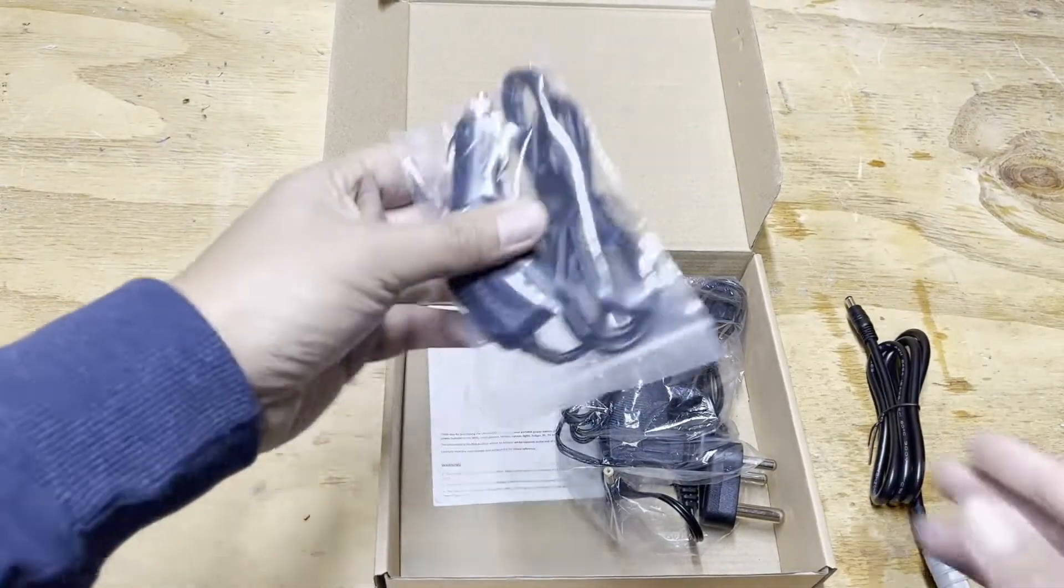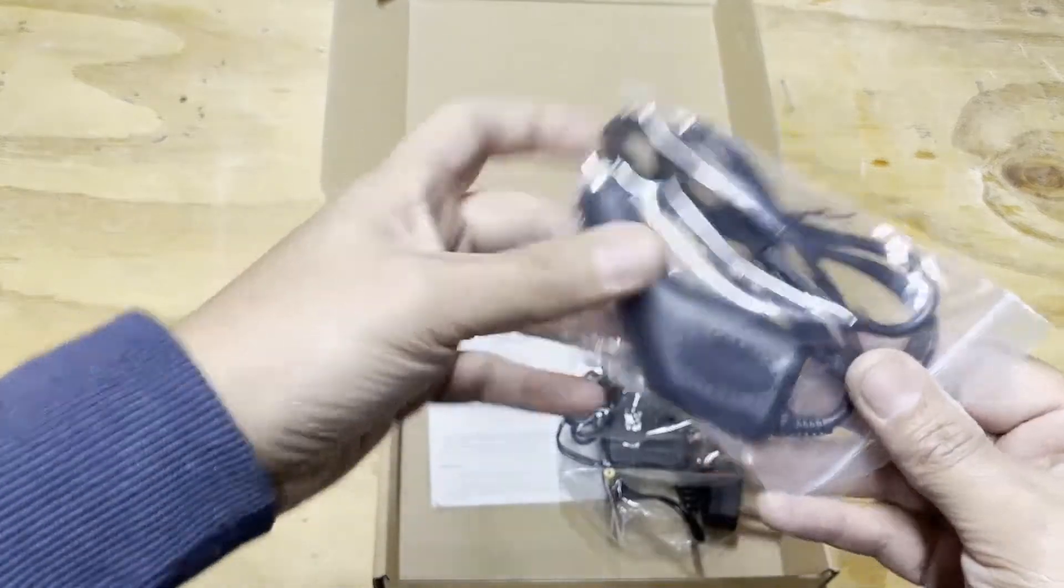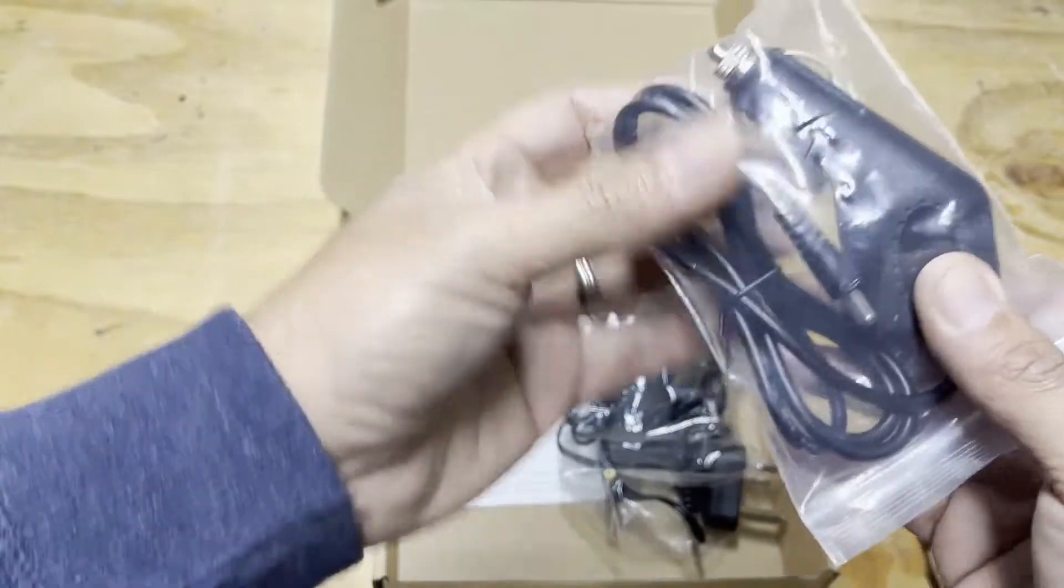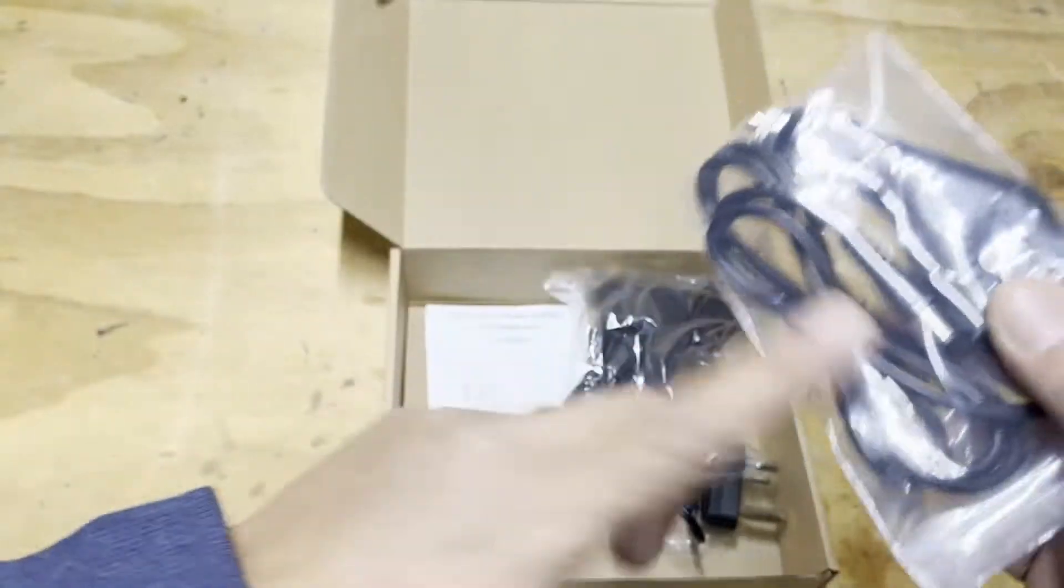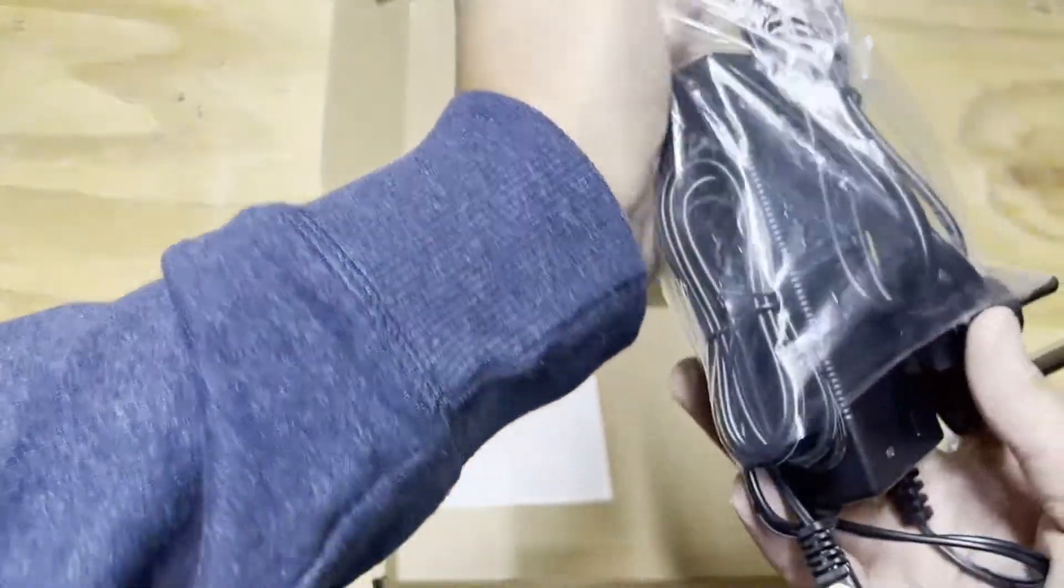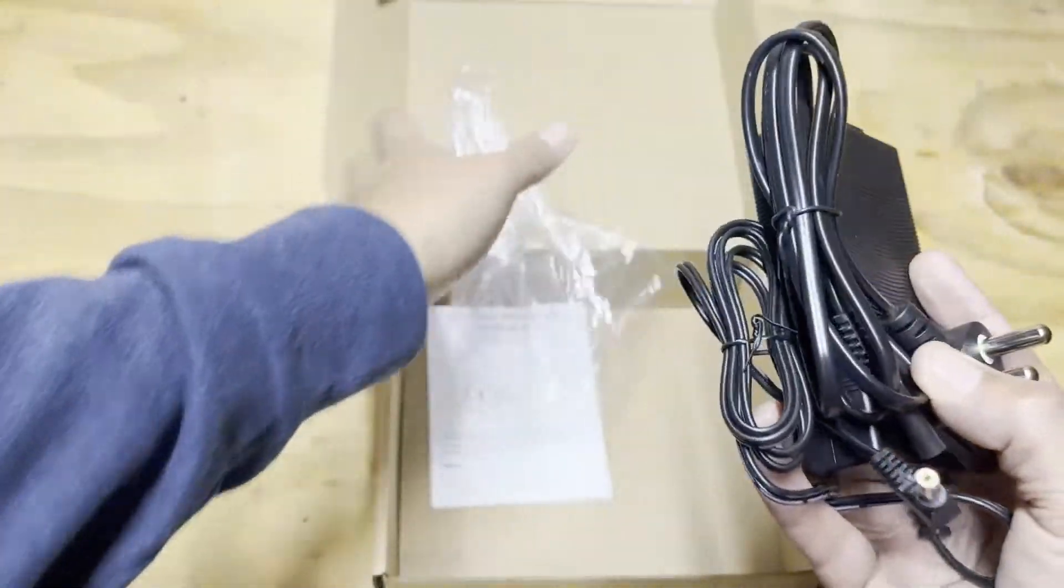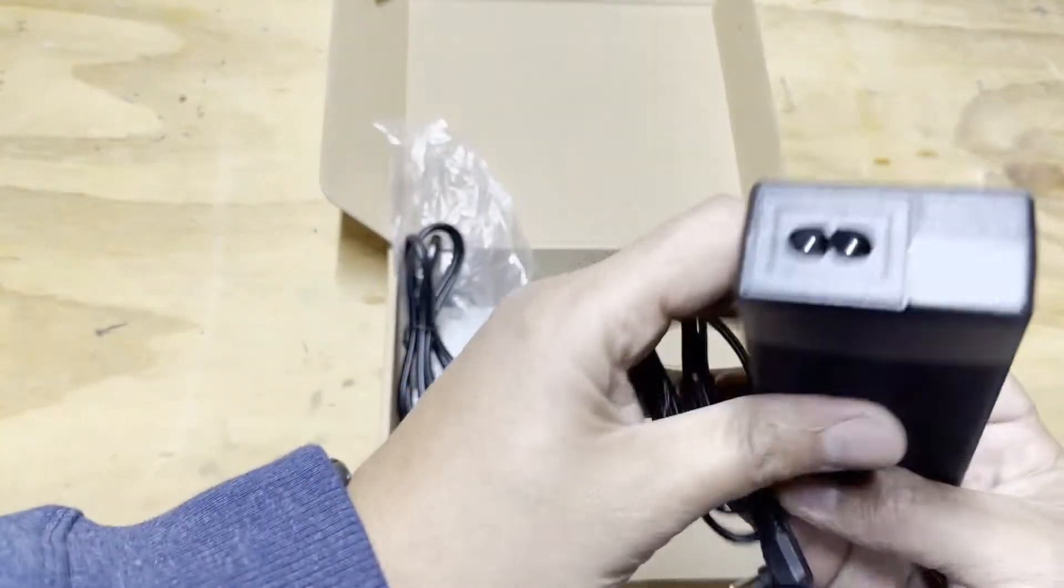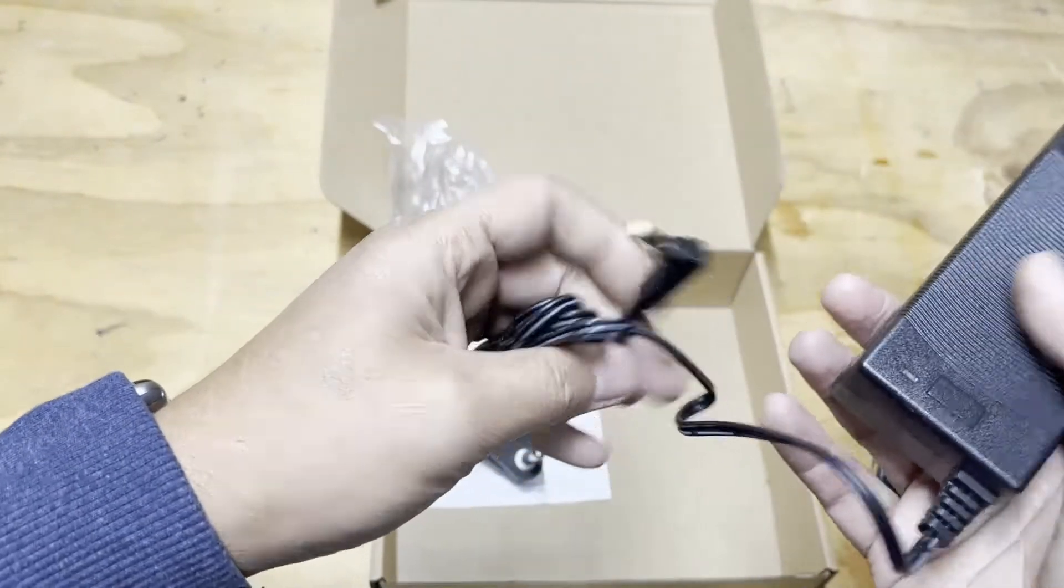We've then got a 12 volt car charger. You plug that into your cigarette lighter and that obviously goes on the back of the unit. And then you've got your AC charger. It comes with a little two-prong plug and then this goes into the unit.